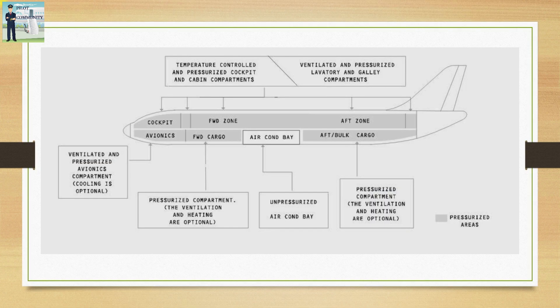Before we get into the pressurization system itself, let us see the different regions inside the aircraft that are pressurized. We have the cockpit, avionics, the forward and aft cabin zone, and the forward and aft cargo section. These are all the pressurized sections. The radome, the air conditioning bay, and the tail section are the unpressurized regions inside the aircraft.